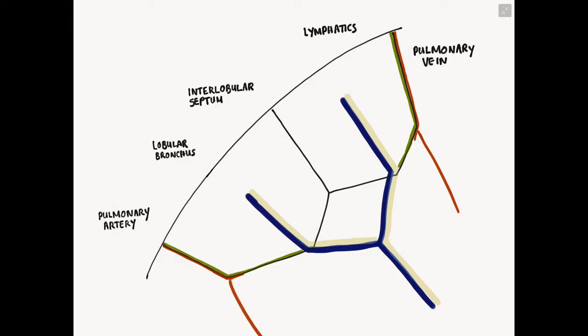The first thing I want to point out is the interlobular septum, which represents the division between each individual secondary pulmonary lobule — it's the periphery of each lobule. The septum contains a couple of important structures: one is the pulmonary vein, drawn in red because it carries oxygenated blood back to the heart, and the second structure in the septum is lymphatics, drawn here in green.